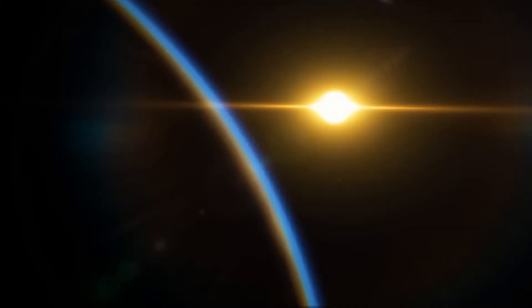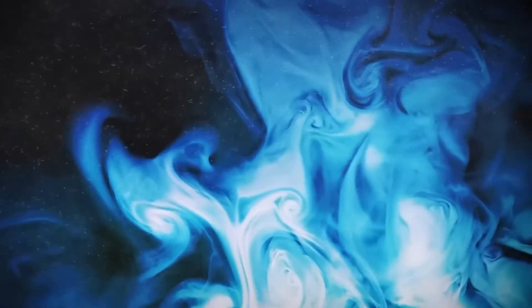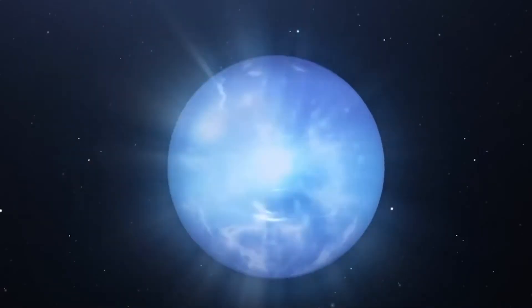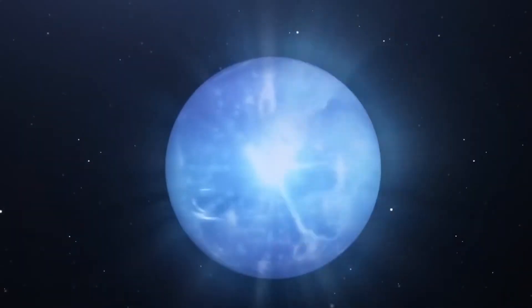Magnetosphere and auroras: Neptune has a strong magnetic field that is tilted relative to its rotation axis. This magnetic field interacts with charged particles from the solar wind, creating auroras near the planet's poles.